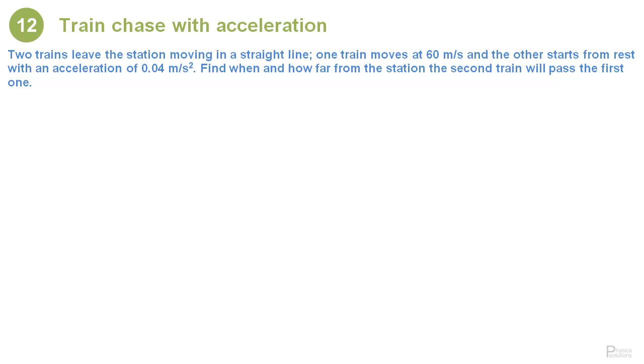As usual we continue with our cartoon. First thing we do is draw the axis. So this is our x-axis. We select our zero coordinate. This is the origin of the coordinate system and here is where the station is. And the two trains will move in the same direction.